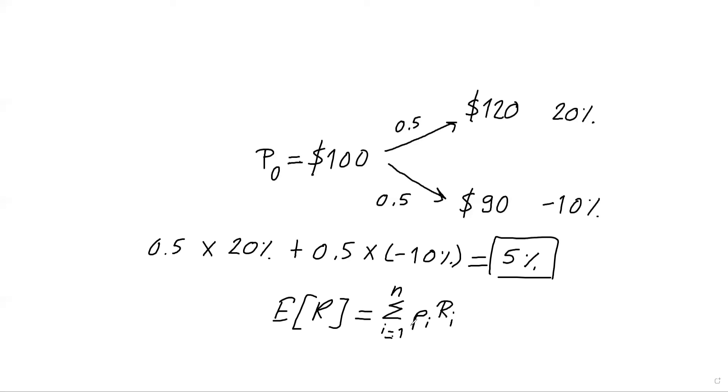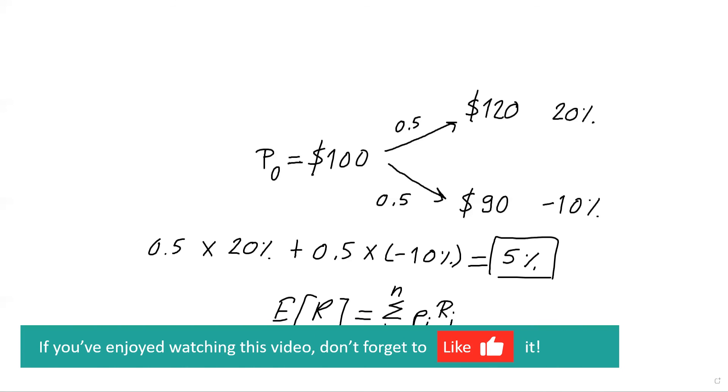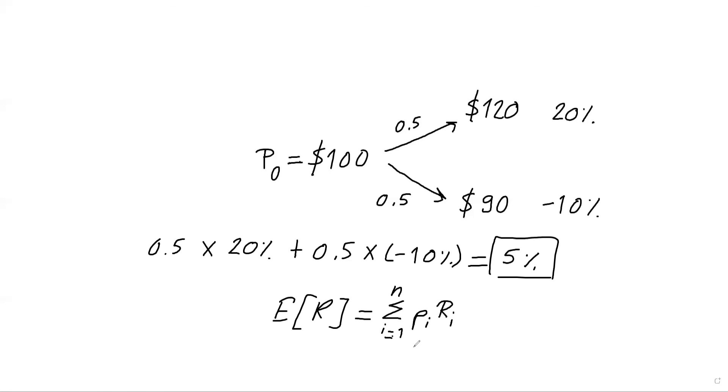And this is what we call a forward looking measure. Because essentially, we are trying to gain insights about the future performance of the stock. In the next video, we will talk more about the risk. Because return is just half of the story. When we are making investment decisions, we shouldn't just look at return, we should look at risk as well. So we will come to that in the next video. But thanks for watching this one. And we will catch up again in the next video.